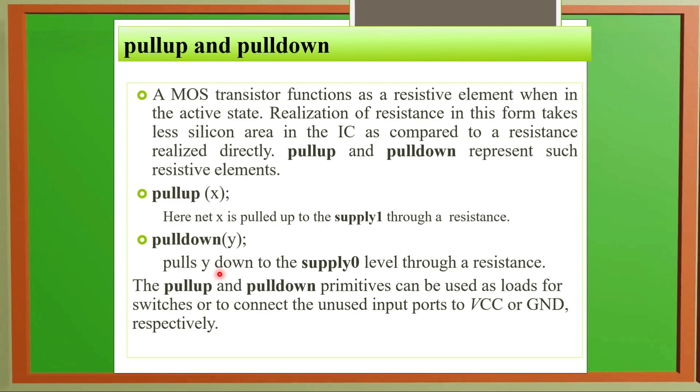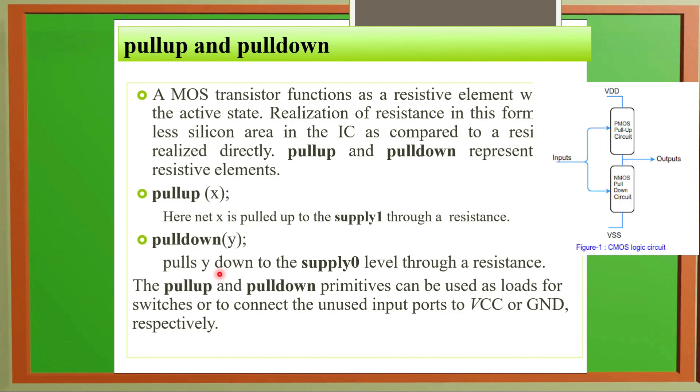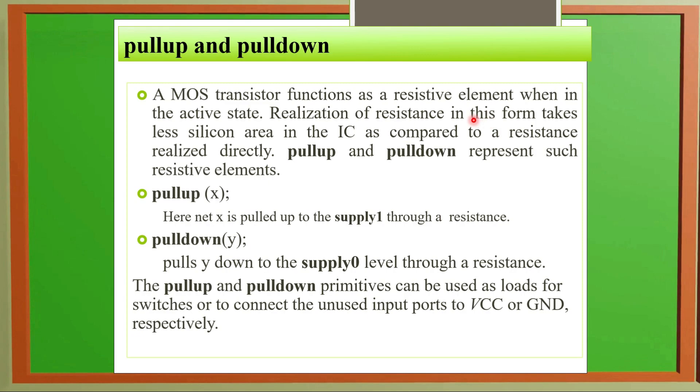We will develop various transistors using silicon material. If we want resistance or capacitance, we create it in a virtual form by using silicon only. So in IC as compared to resistance, pull up and pull down represent such resistive elements.